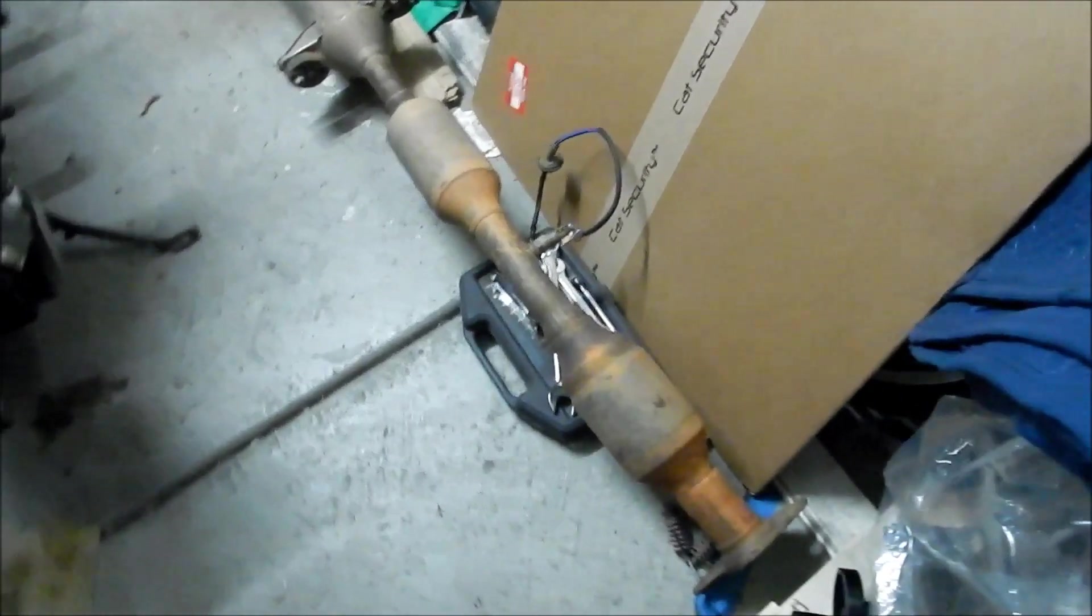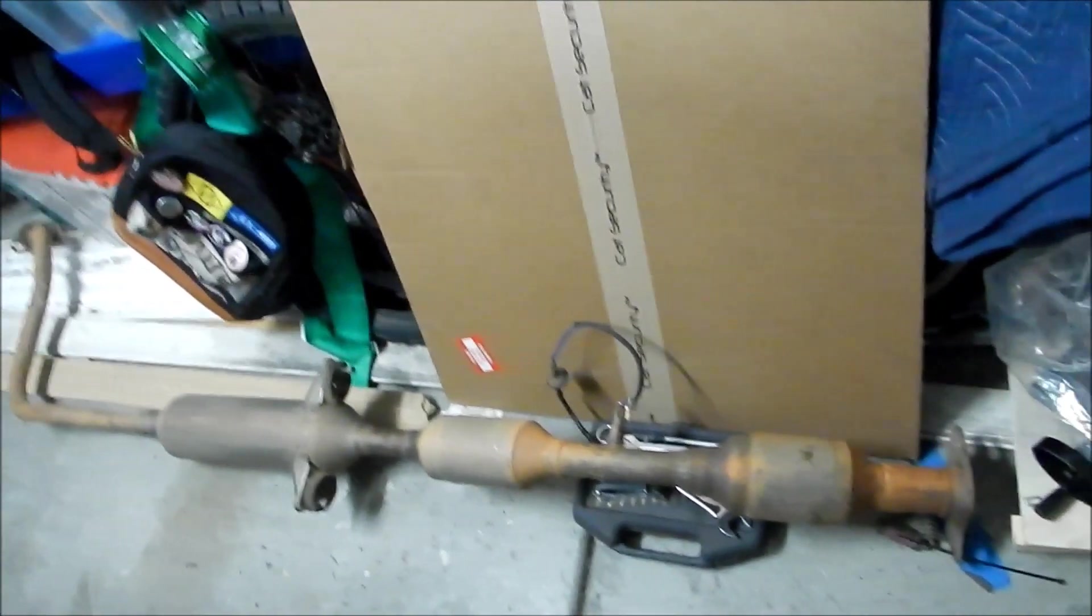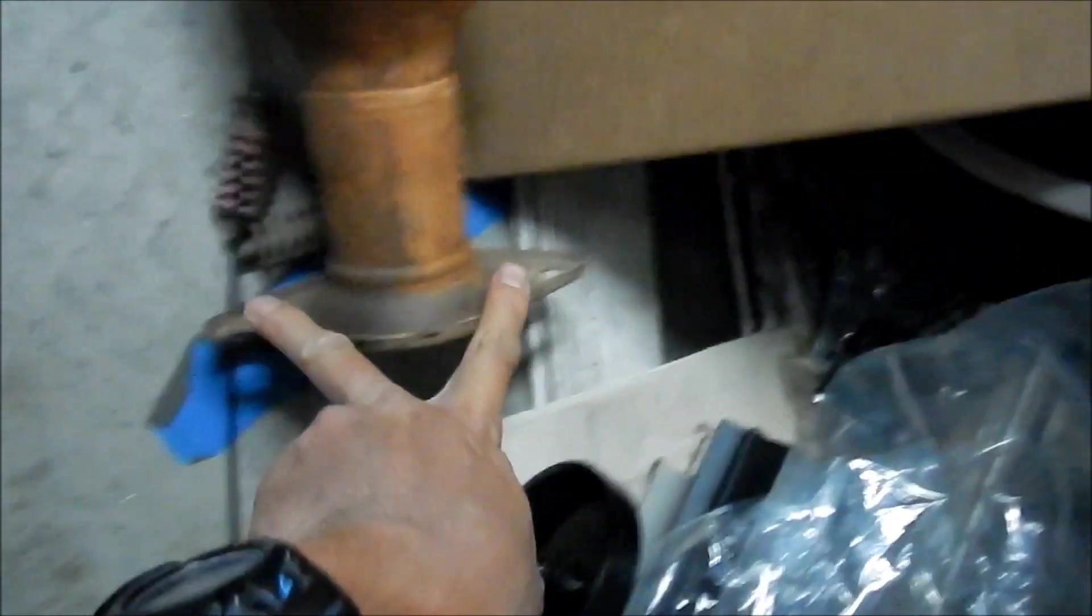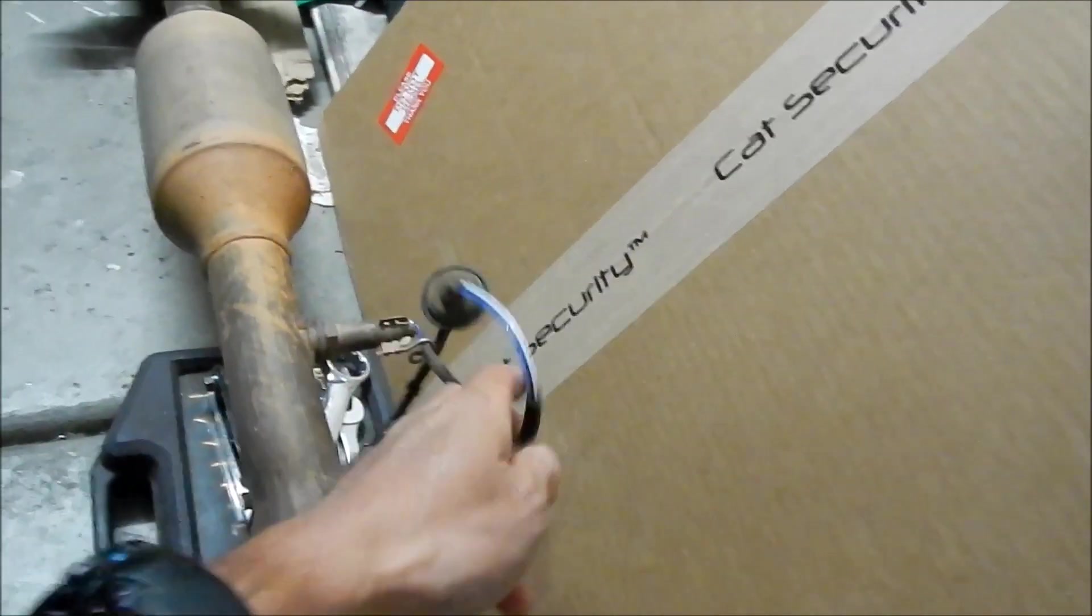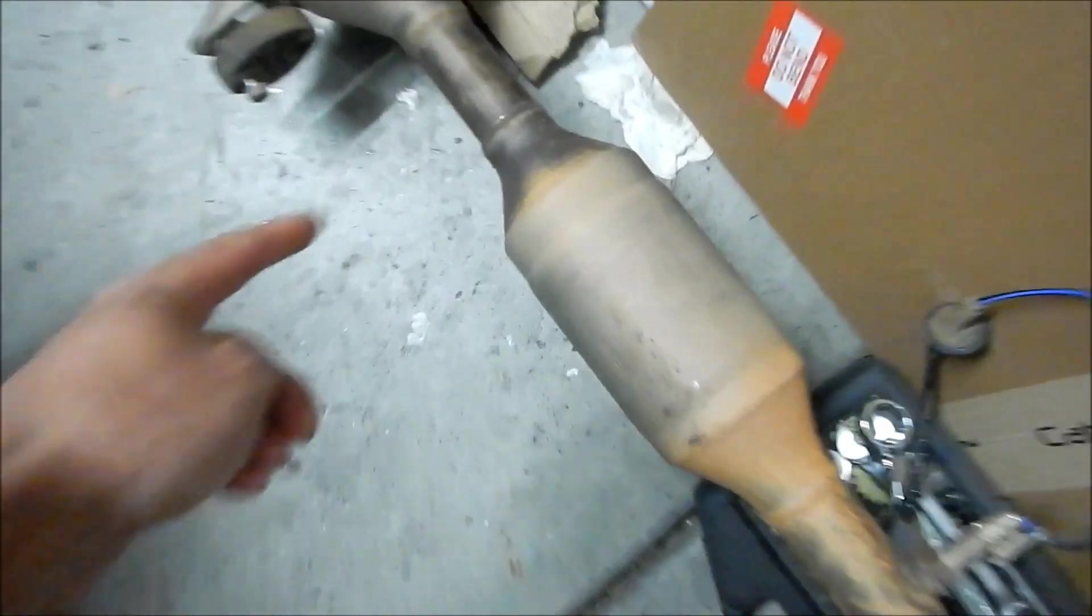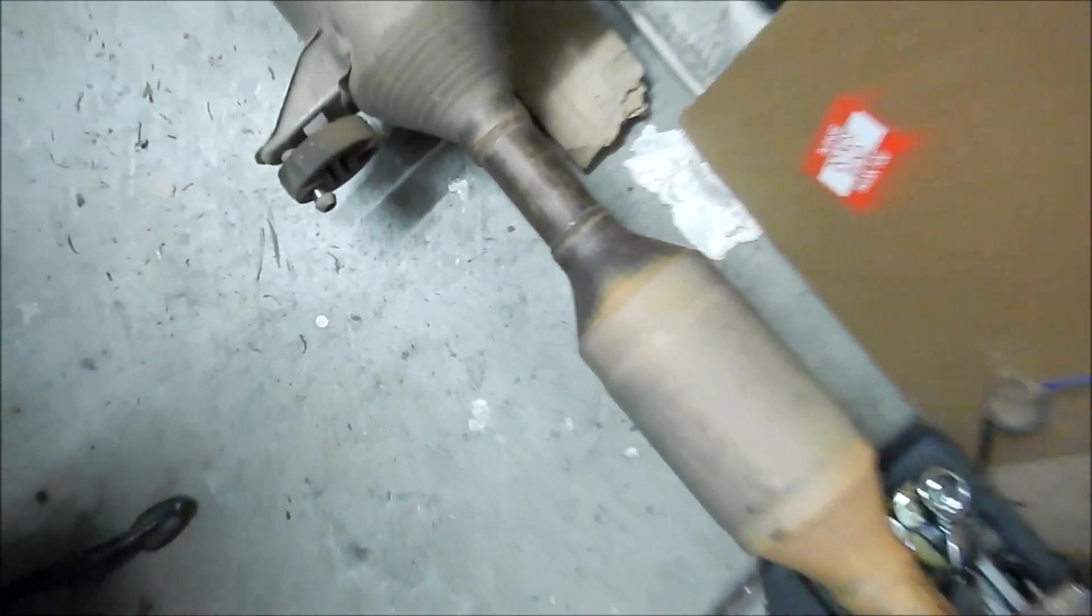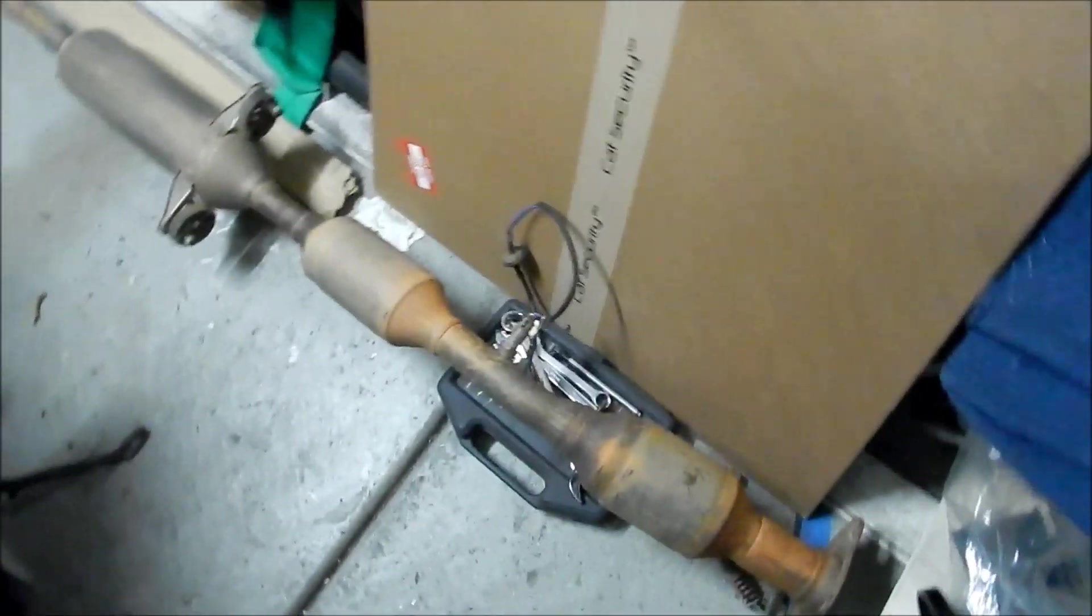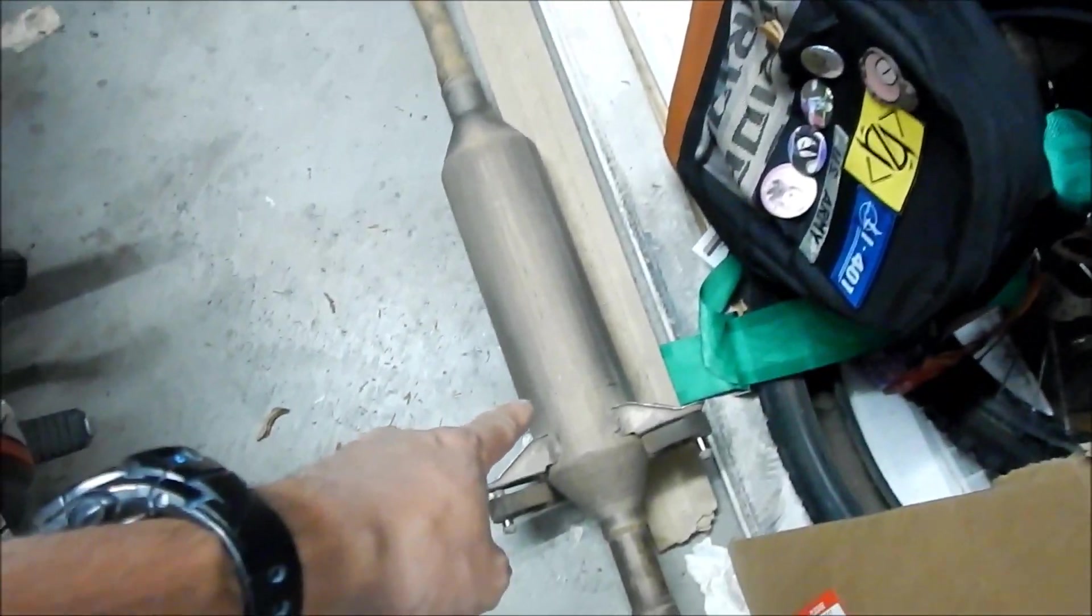So this is what it looks like when it's not in the car, when it's all out. If you remember the last video, what the thieves have done is they unbolted the cat right here, cut the O2 sensor out, and then they cut right here. So that's the part they took, just the part with the catalytic converter. The rest is just a bunch of piping and a resonator.